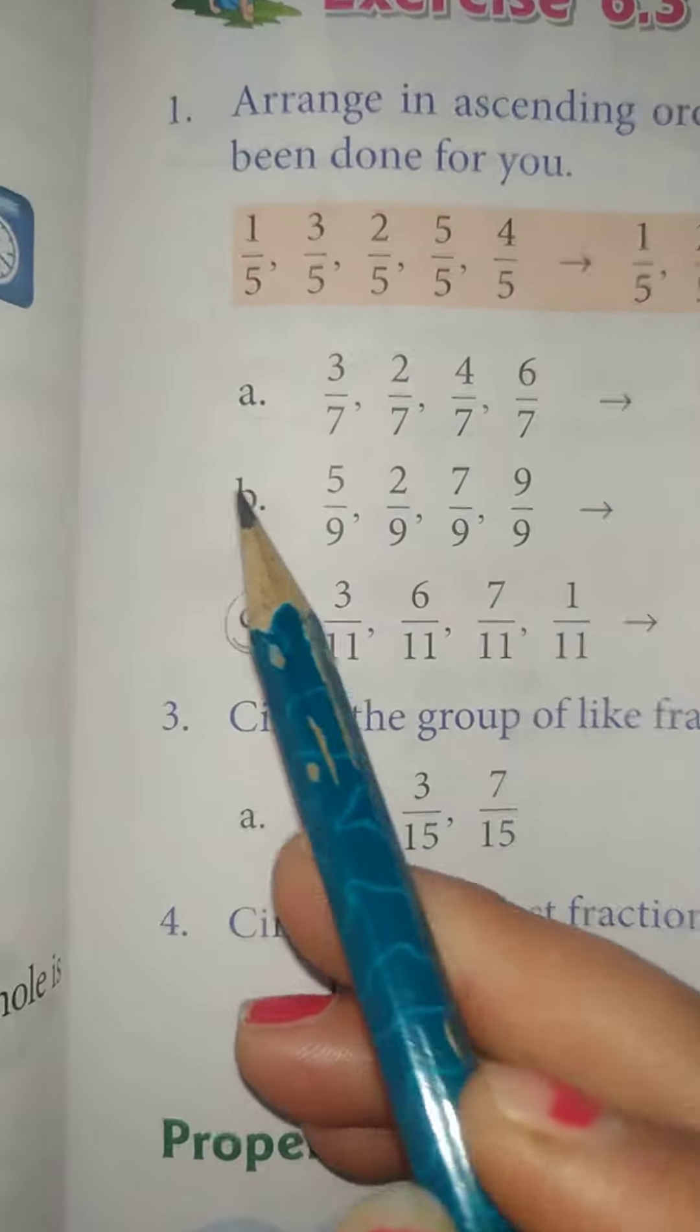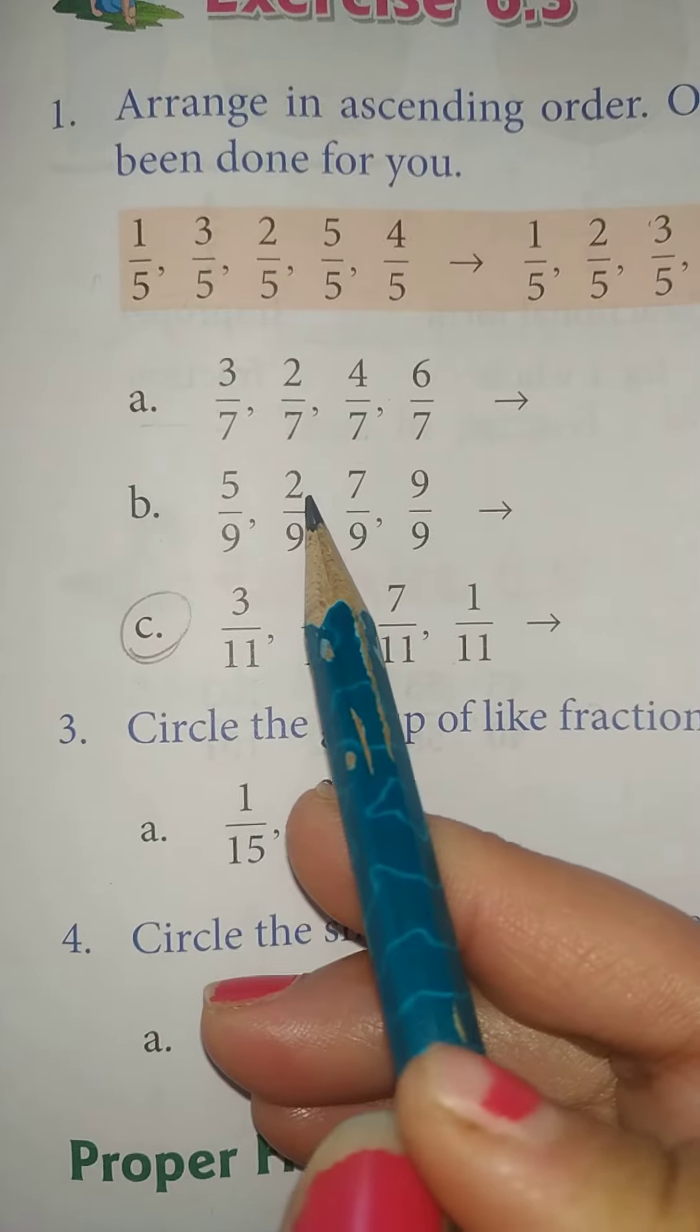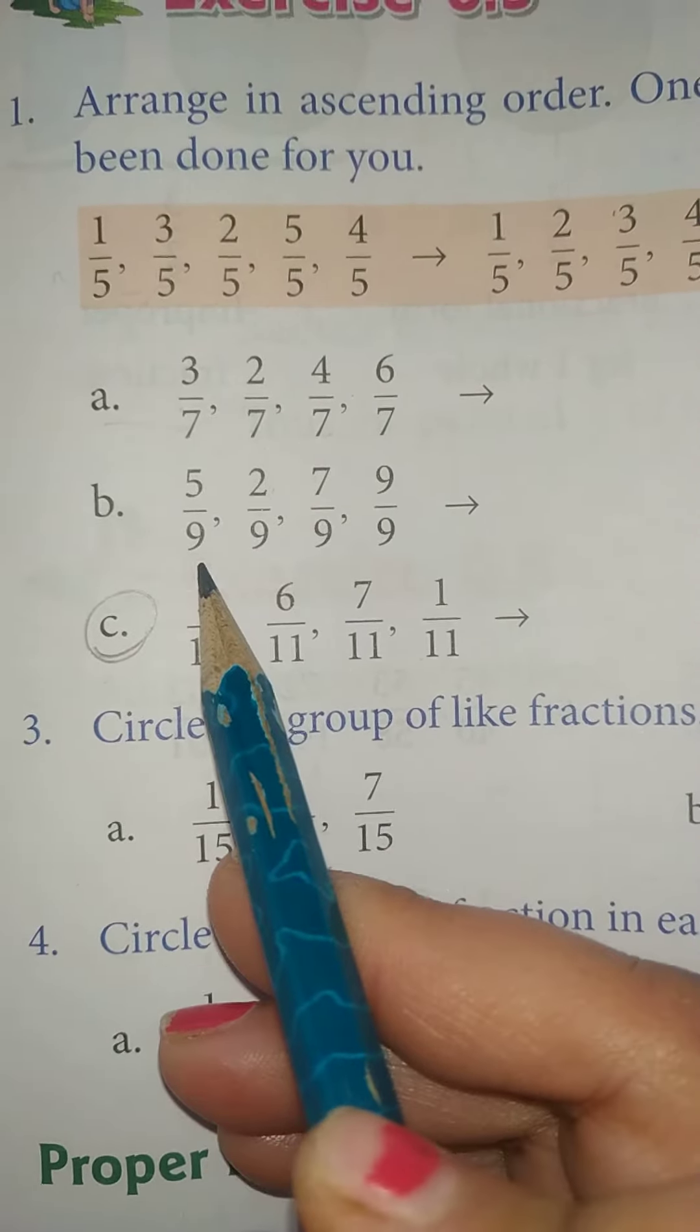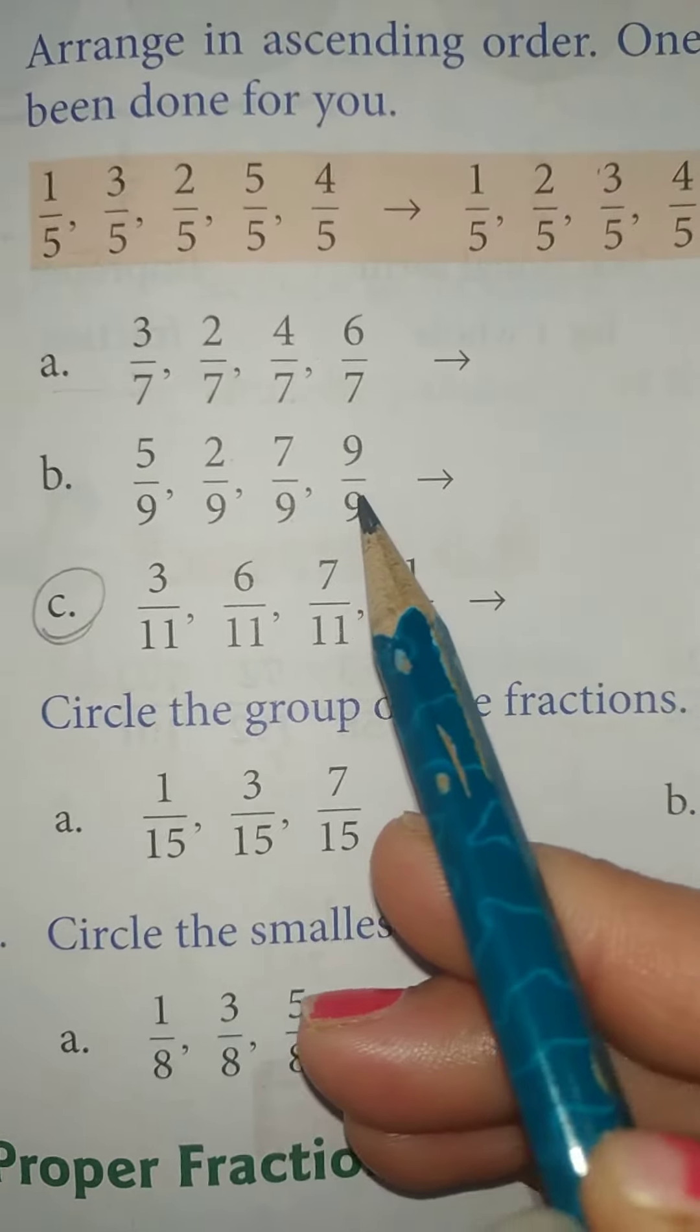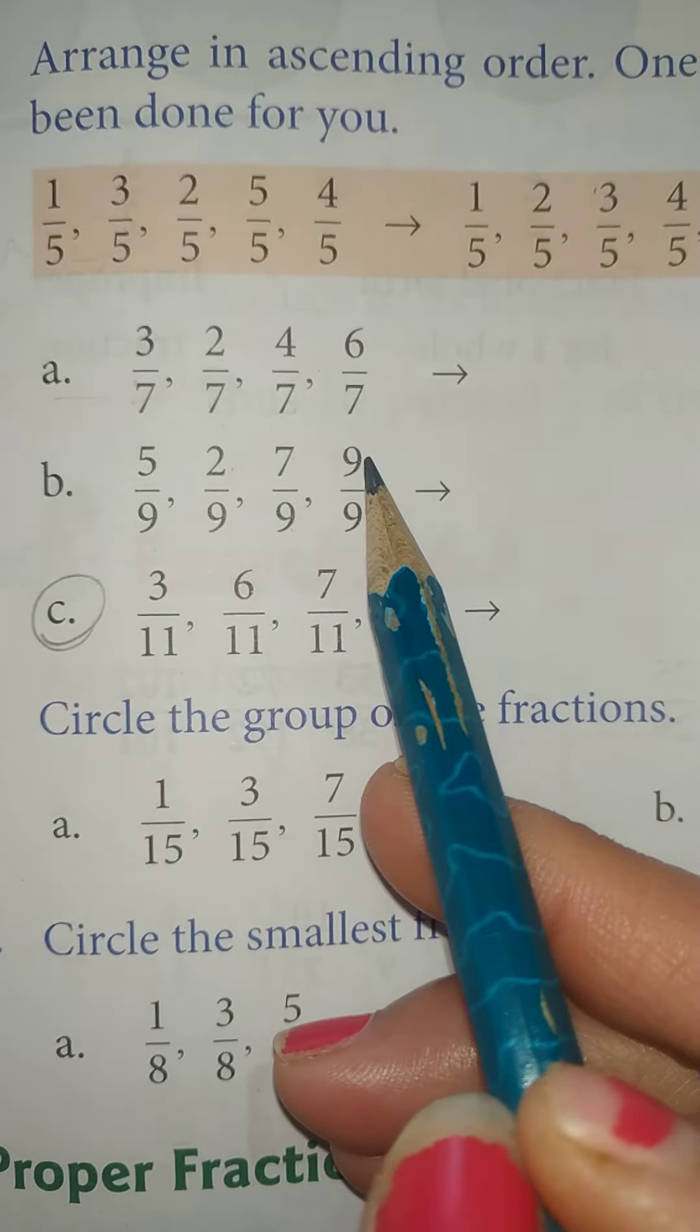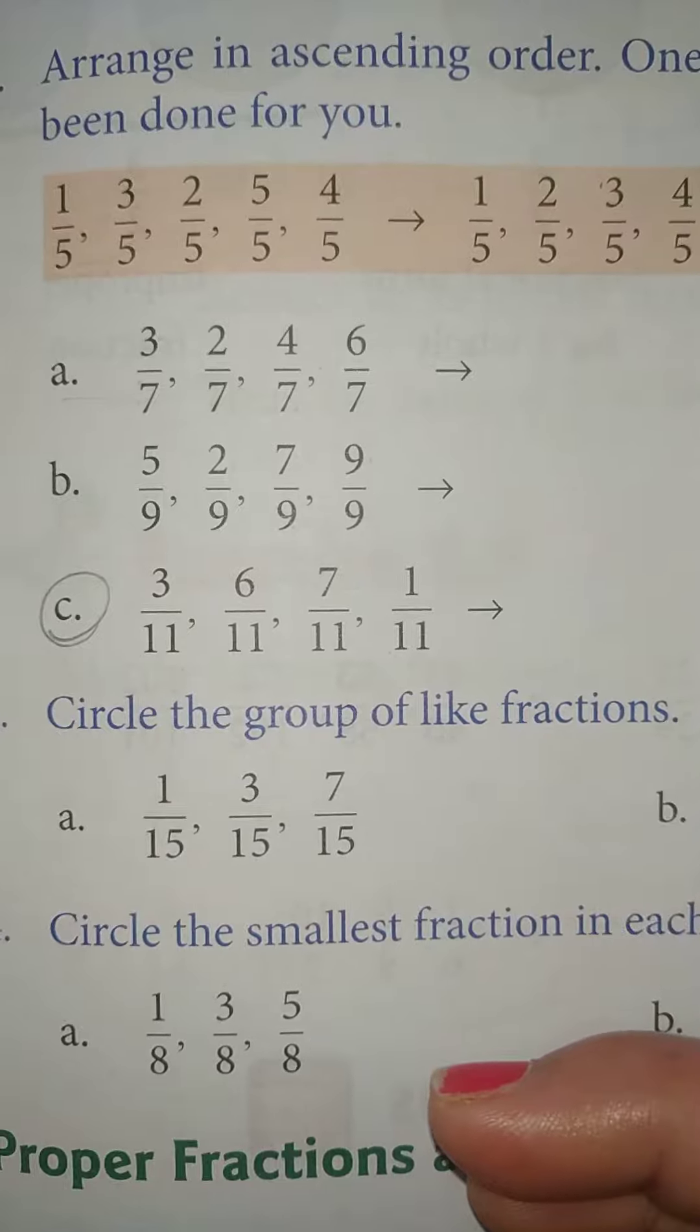Okay, then in b part smallest is 2 by 9, then 5 by 9, and then 7 by 9, and the biggest fraction here is 9 by 9. So this is the ascending order.